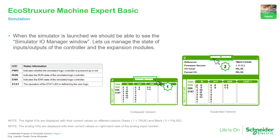Just to let you know, when we click on each of these inputs it will change the status. So if we click on one of these it will turn green, and if it's off it will go to black. We also have on the left part, as you can see here, the status of the PLC so we can have a feedback of the actual behavior.